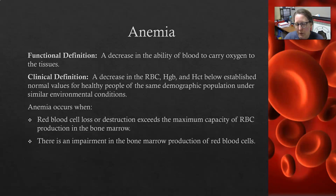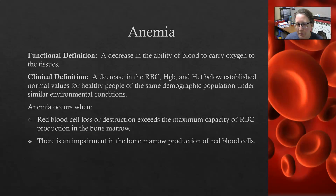If the GI bleed is chronic, the problem could be that the person is losing more blood in their GI system than the bone marrow can replenish. A destruction example would be any of the hemolytic anemias, where the red cells can be coated with antibodies, and then that causes them to be pulled from the circulation.